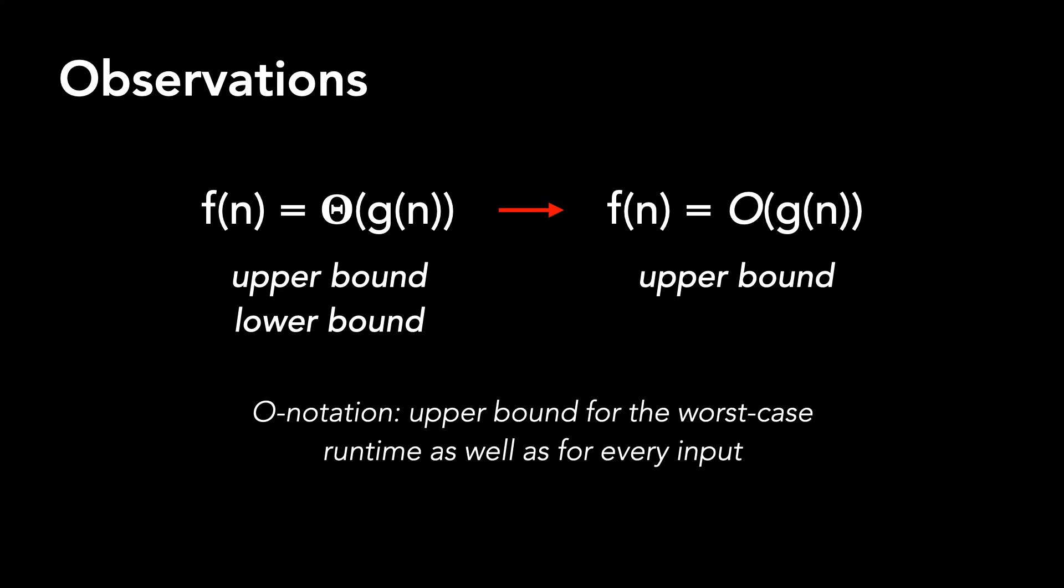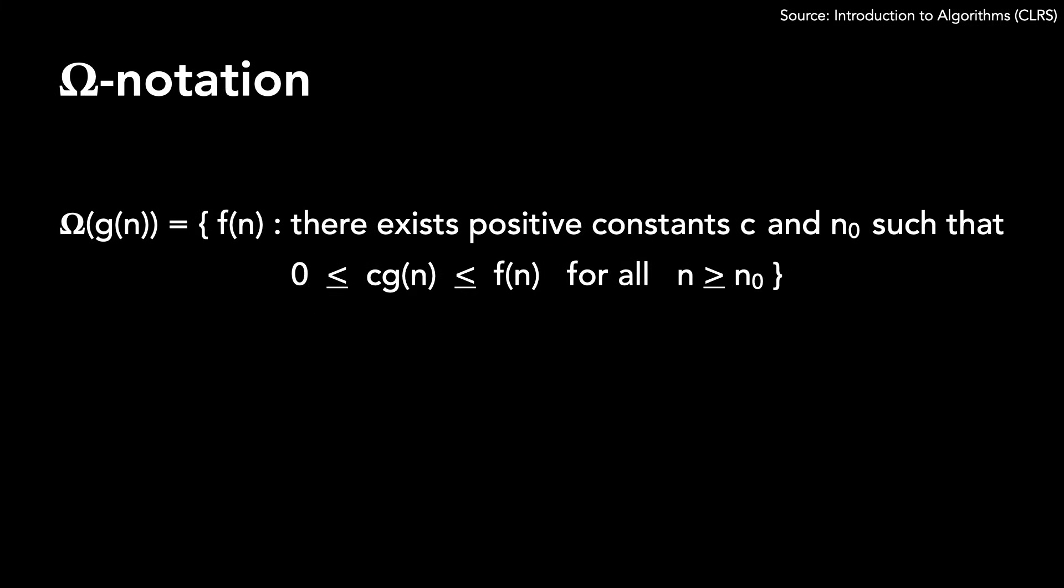Let's take a look at the final asymptotic notation we'll cover in this video, omega notation. We'll formally define it as Ω(g(n)) means there is f(n) such that there exist positive constants c and n0 where 0 ≤ c·g(n) ≤ f(n) for all n ≥ n0.